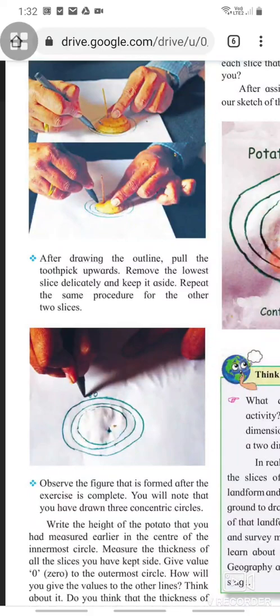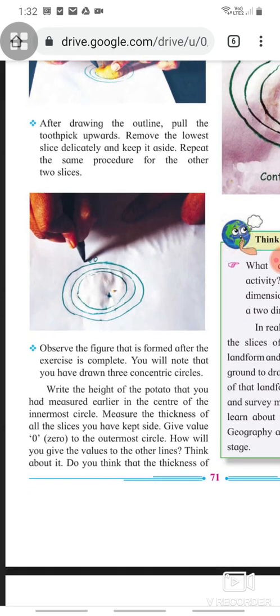After drawing the outline, pull the toothpick upwards, remove the lowest slice delicately and keep it aside. Repeat the same procedure for the other two slices. Observe the figure that is formed after the exercise is complete. You will note that you have drawn three concentric circles. Write the height of the potato that you had measured earlier in the center of the innermost circle.